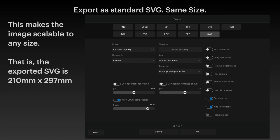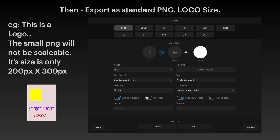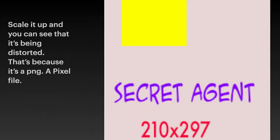However, what happens is people export that to a PNG file or a JPG file and make it very small. This is an example logo. If you export it as a standard PNG or logo size, this image is only 200 pixels by 300 pixels — you can see it's quite small. That's how it looks at actual size on screen, and you can see it there in the export persona: 200 pixels by 283. It's a nice small logo. But what happens if you then try and enlarge it — put it on your big computer screen, expand it on your iPad? Scale it up and you can see it's being distorted. That's because it's a PNG file, a pixel file, and you're enlarging it to a size bigger than you saved it as. You could make it smaller and it will retain its sharpness, but make it bigger and it will go all jaggy.